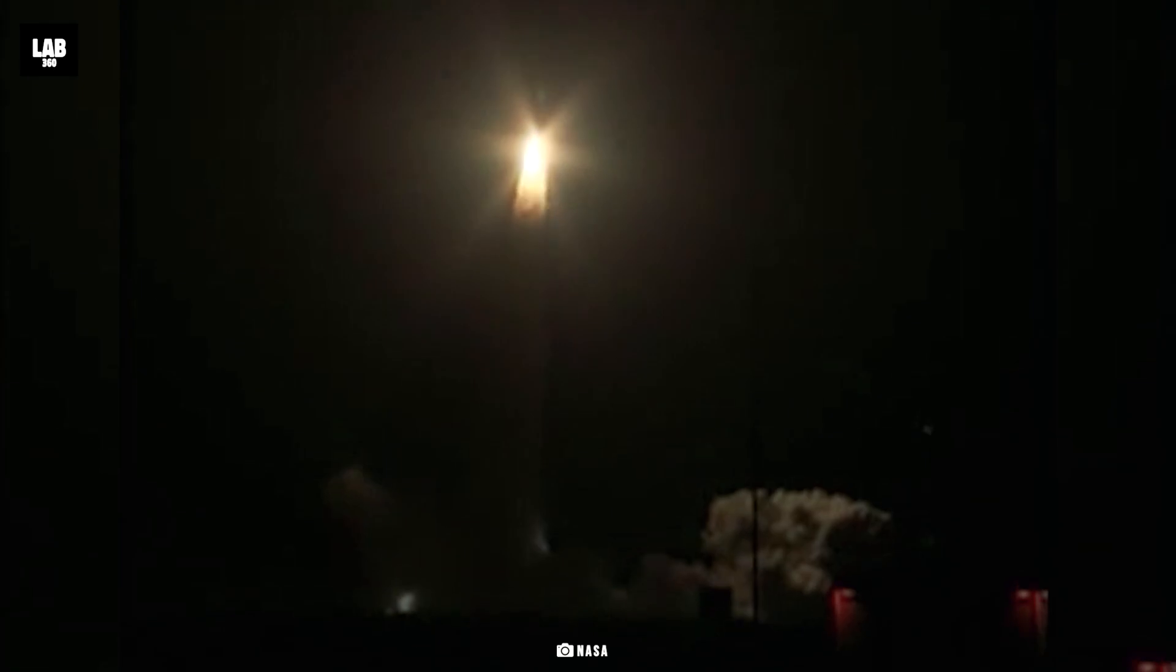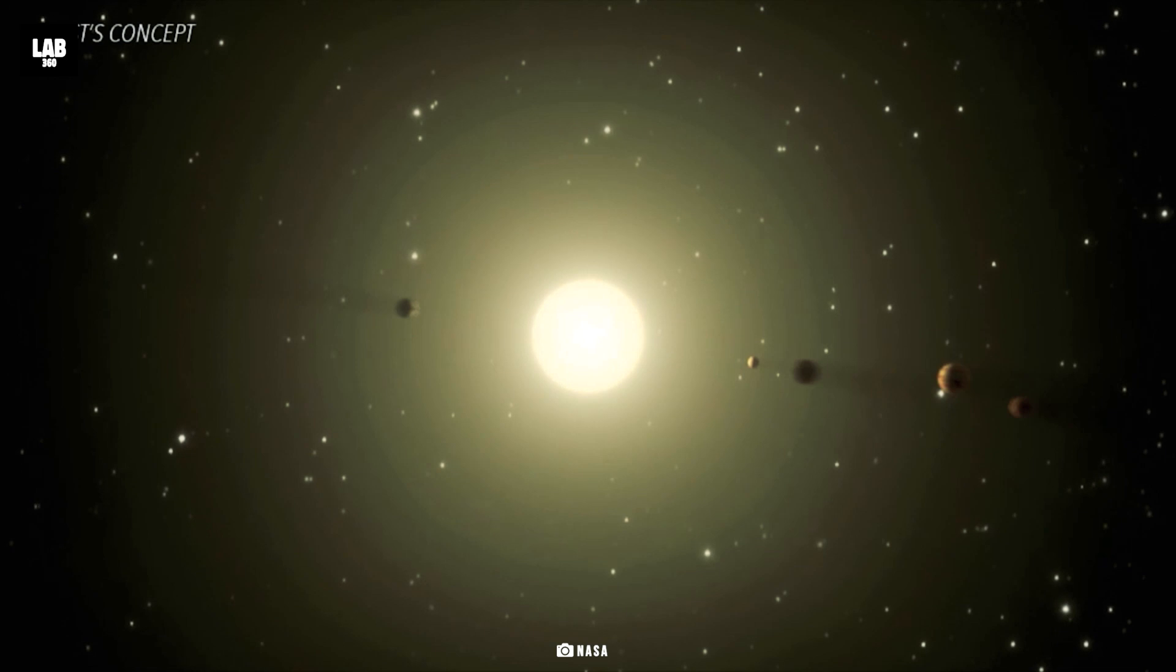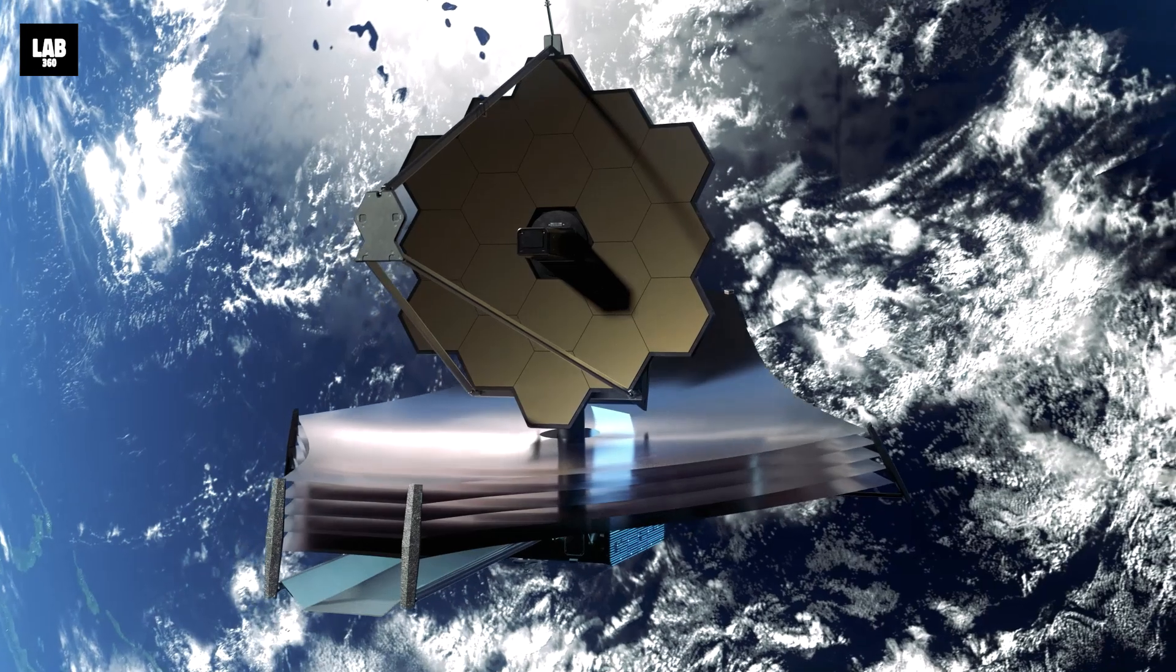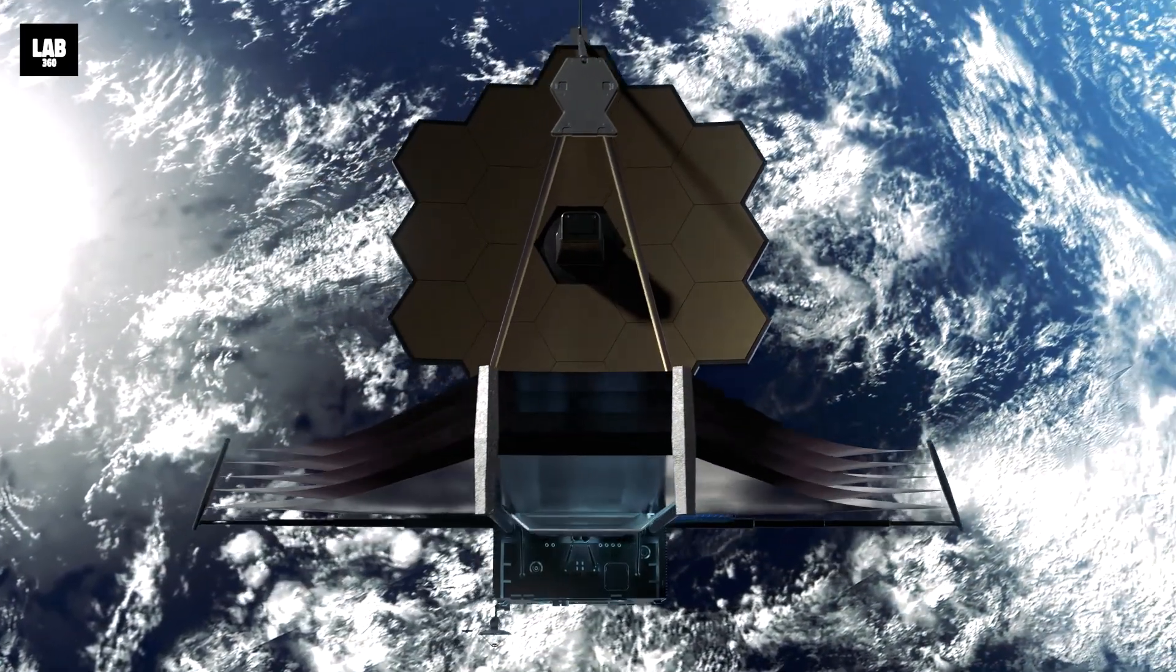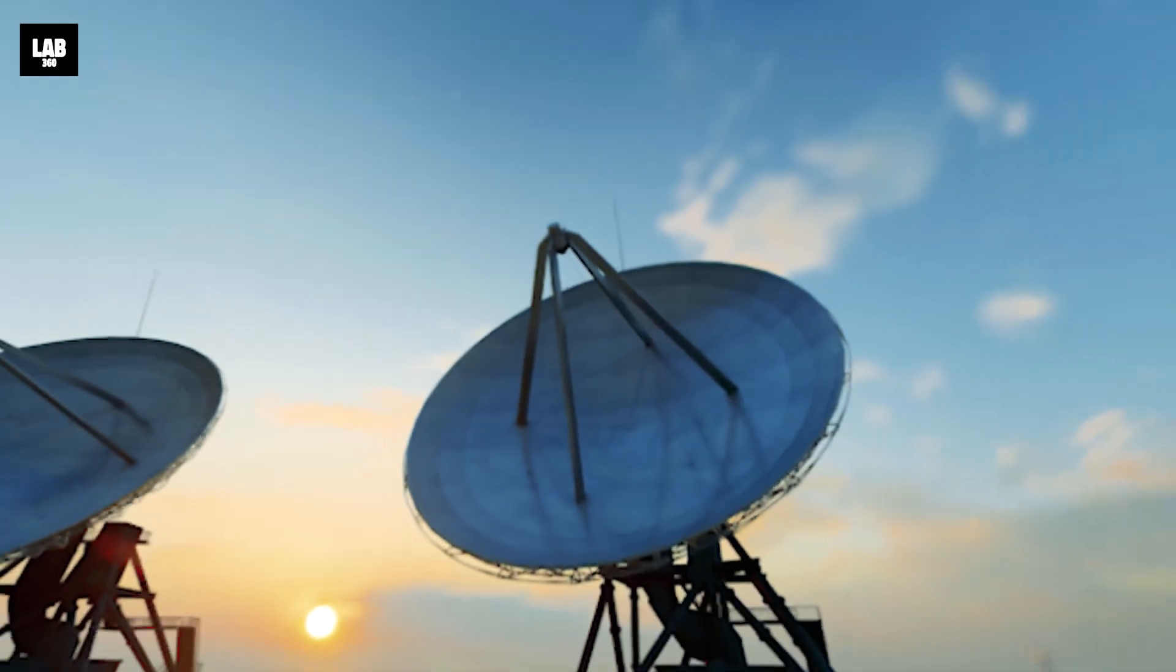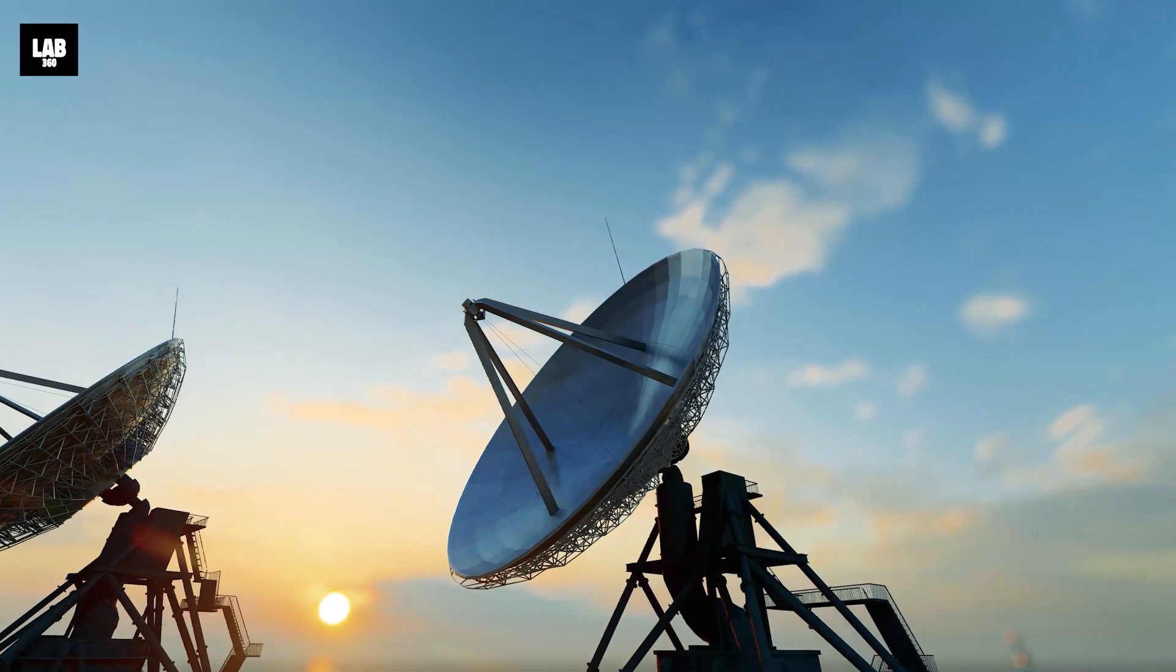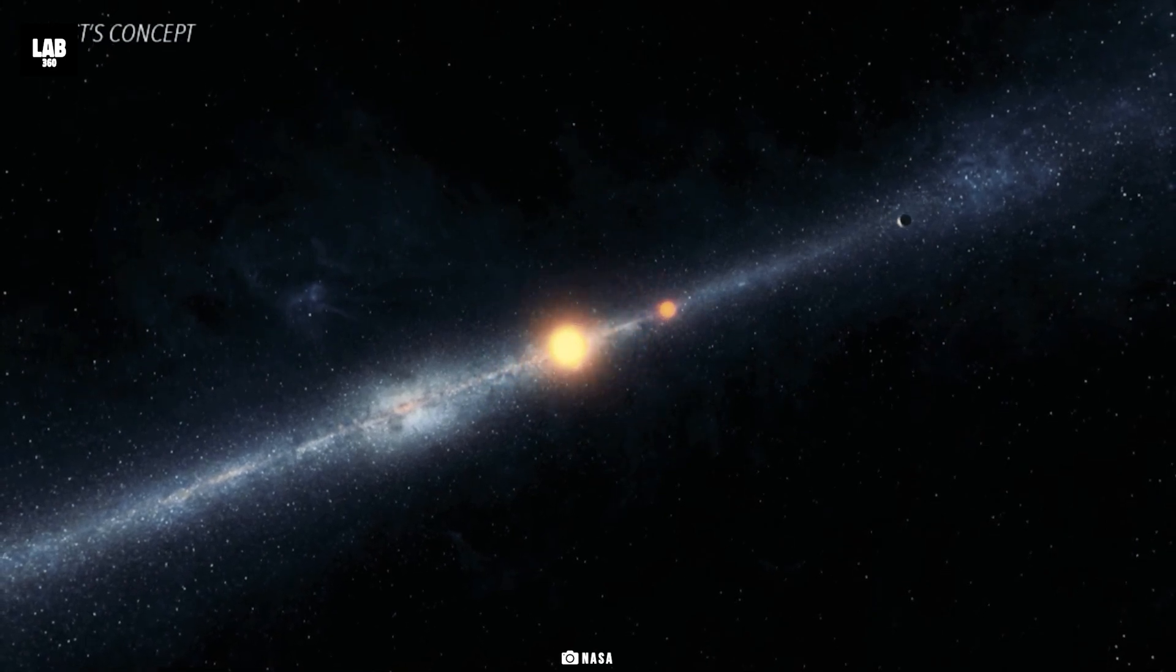The Kepler space telescope was NASA's first planet hunting mission, assigned to search a portion of the Milky Way galaxy for Earth-sized planets orbiting stars outside our solar system. TESS finalizes on planets for further characterization by the James Webb Space Telescope as well as other large ground-based and space-based telescopes of the future.